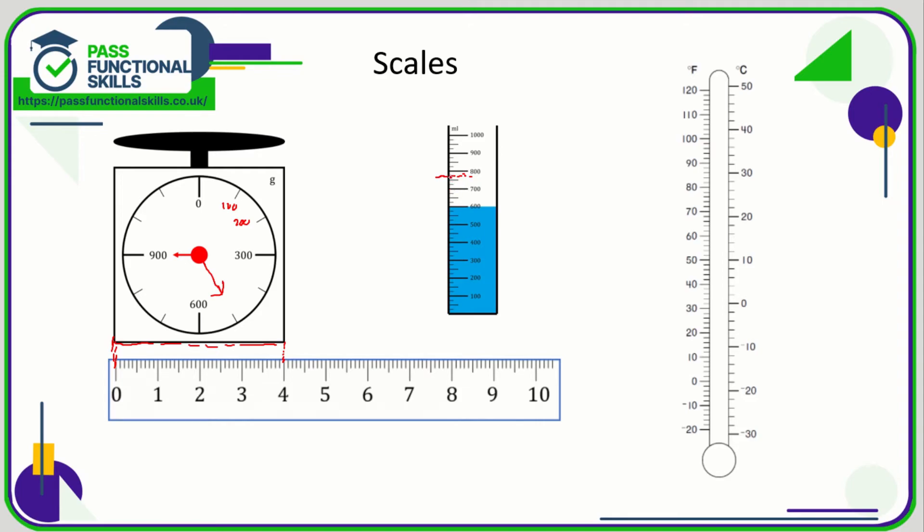With a thermometer, normally you'll just see a colored liquid or it'll be marked up to a certain point, and again you just need to take the reading which could either be in Fahrenheit or Celsius. So here would be approximately 60 degrees Fahrenheit and approximately 16 degrees Celsius.